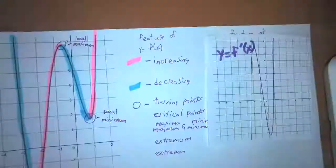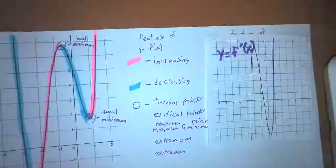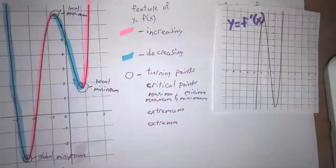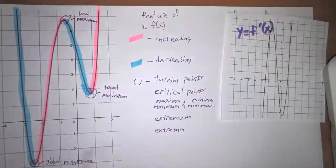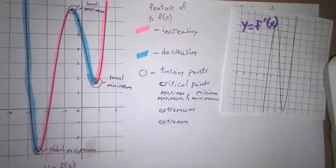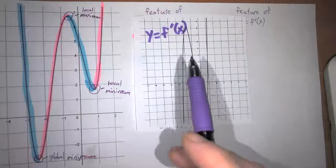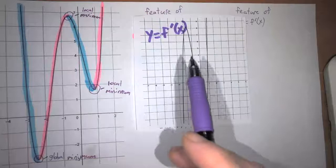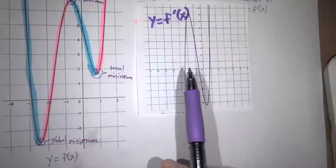So here's the graph we dealt with. The blue sections were where the function was decreasing, the pink section was where the function was increasing, and the circled parts were where the graph was experiencing a turning point. I want you to pay close attention to both what's happening in this graph of f(x) and this graph of f'(x), the derivative of f, and see if the intervals I'm talking about have something interesting happening in the derivative function.